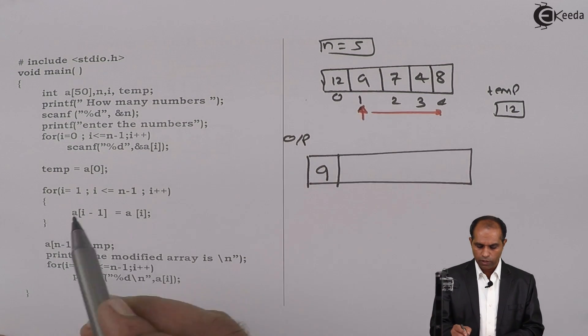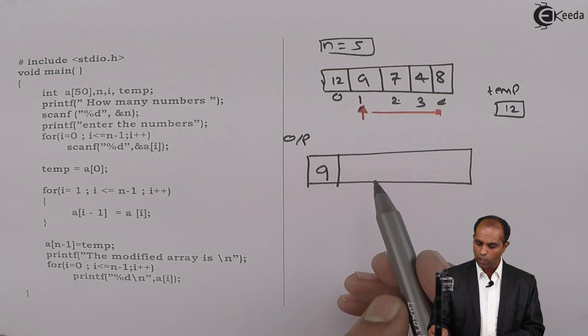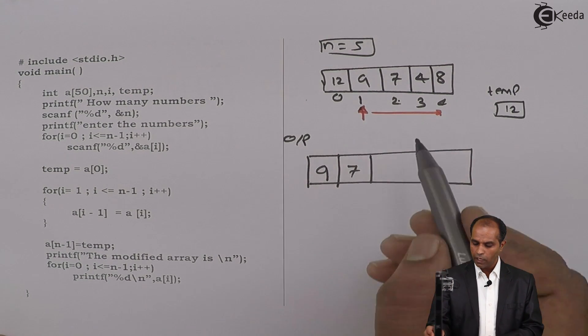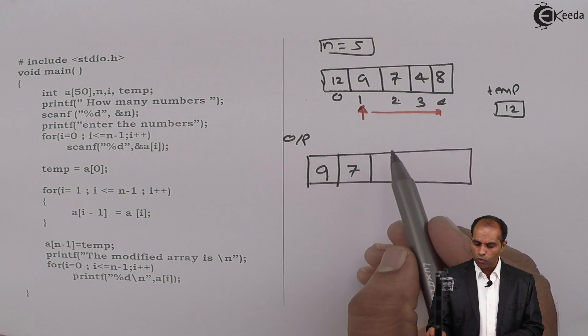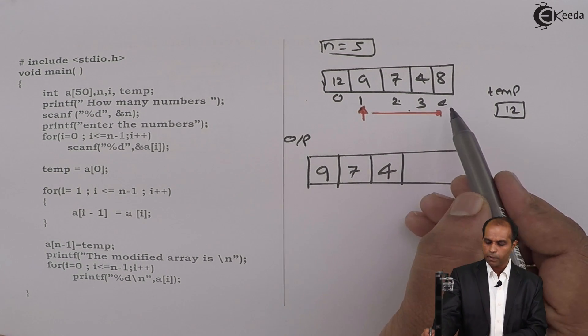So 9 goes to this location. Go back, i plus plus, i becomes 2. a[2] should go to a[1], that is 7. Then i becomes 3. a[3] should go to a[2], that is 4. Then finally, at one time, i becomes 4.